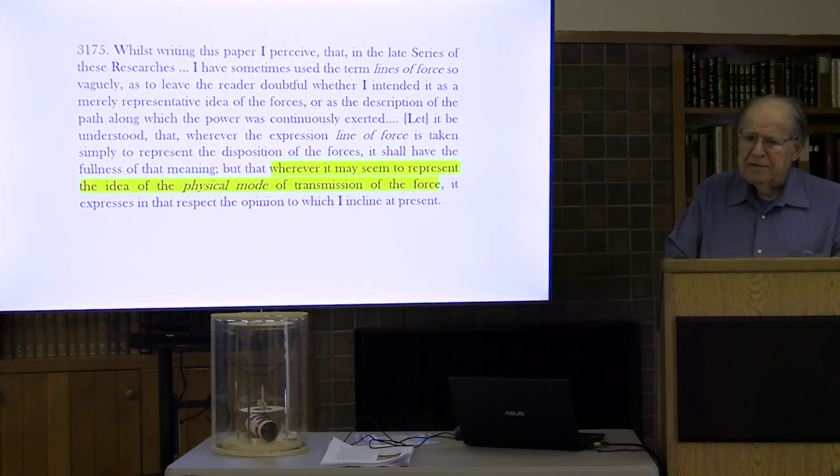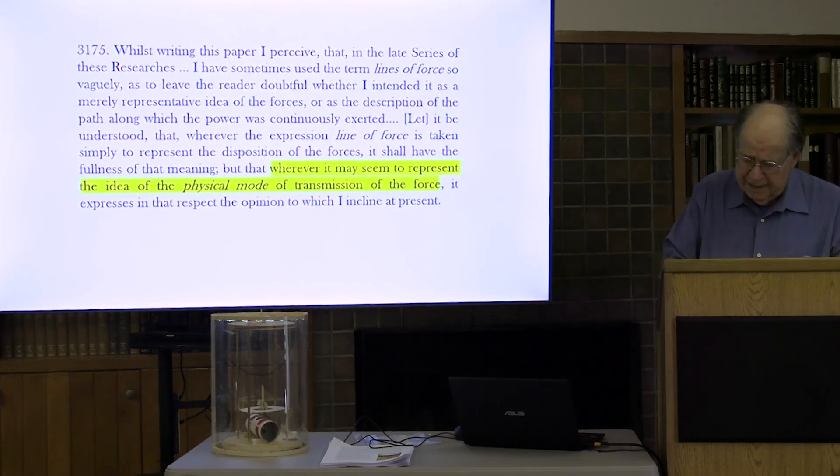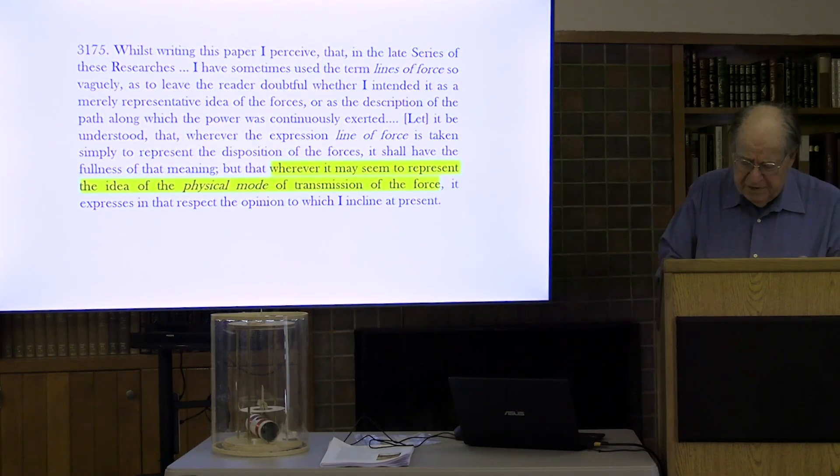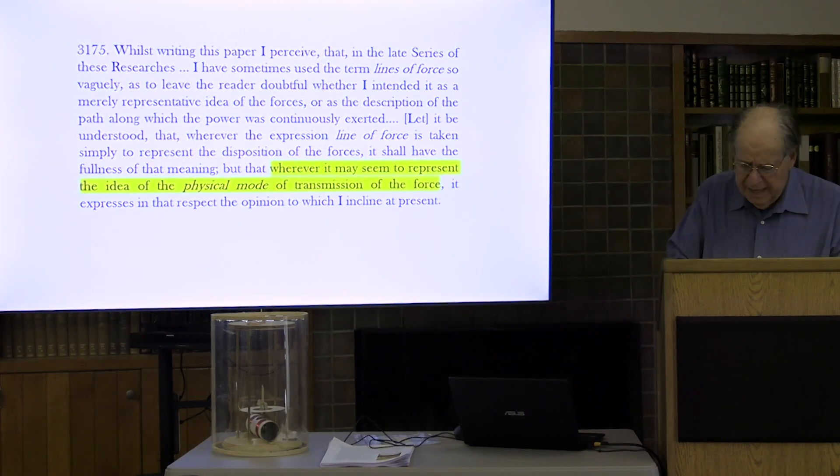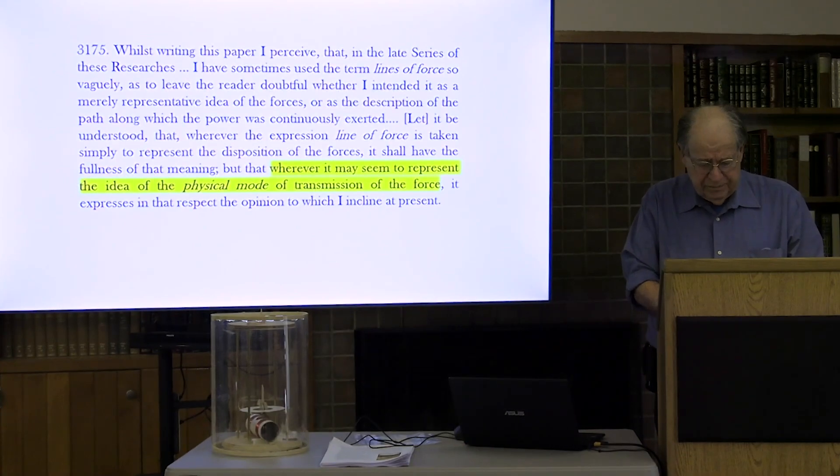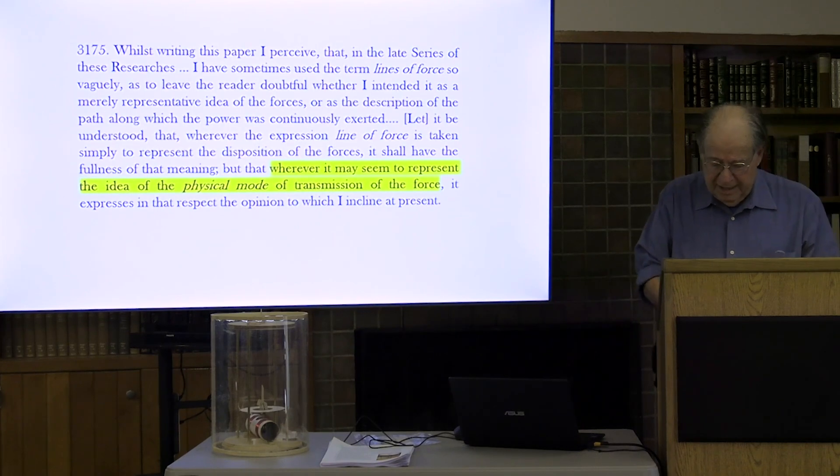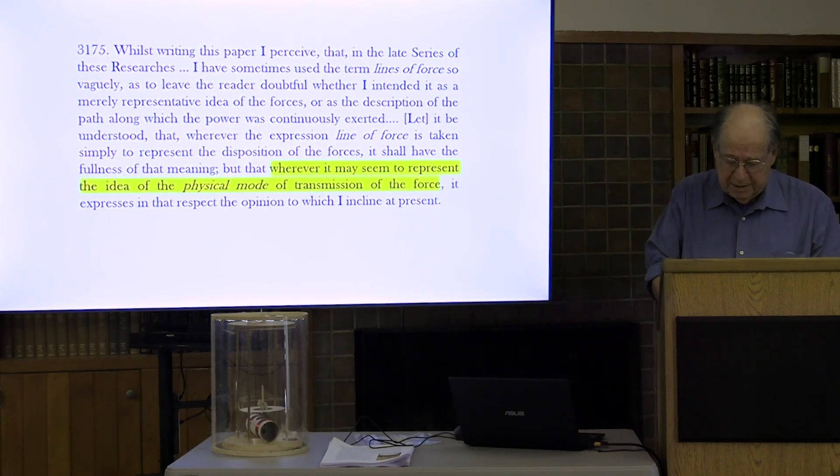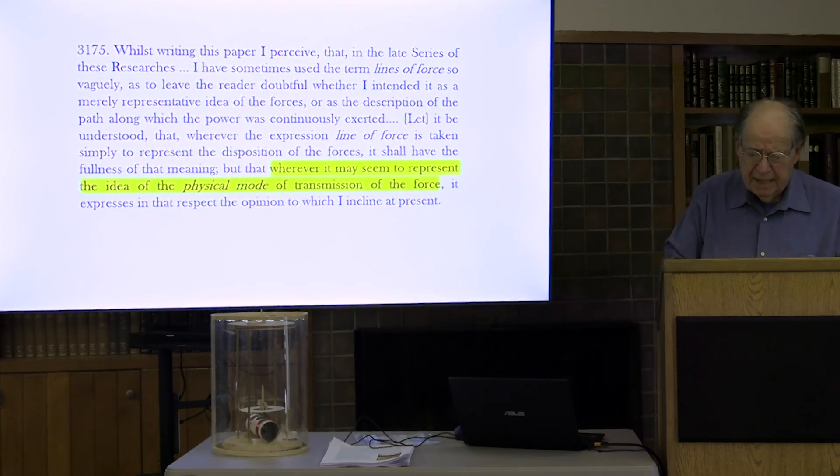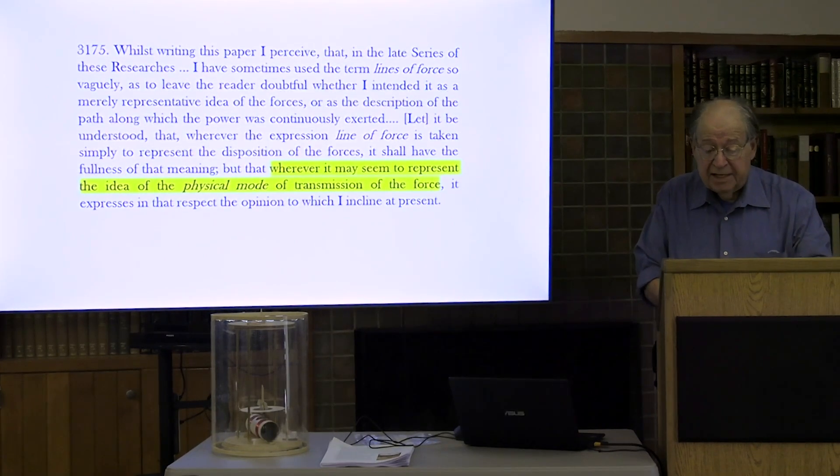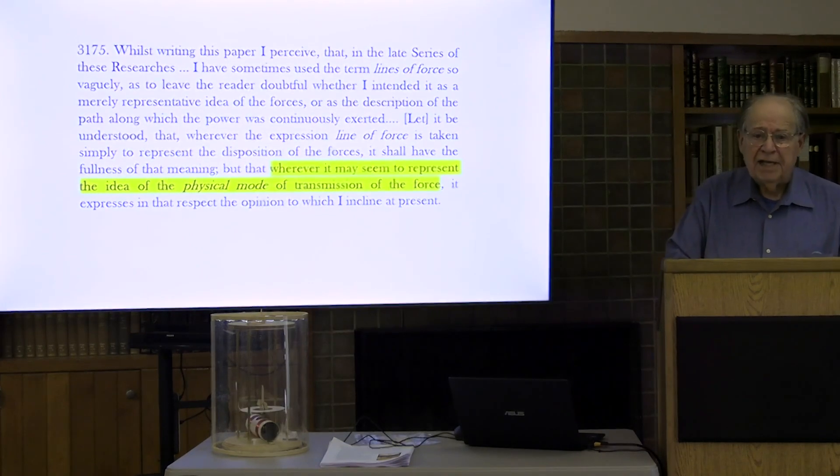What does Faraday discover in the 28th series that finally sways him to incline, as he says, towards the view that the lines of force are truly physical entities? I think he discovers two things. First, that the lines of force can be counted. Second, that they are no mere landmarks in magnetic space, but are the very bearers of the magnetic force. The integrating galvanometer plays an essential part in both of these discoveries. Let us see how that comes about.